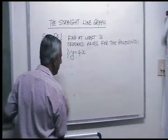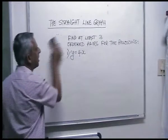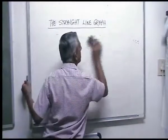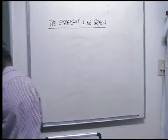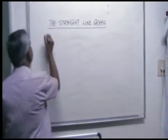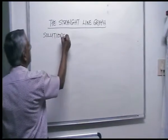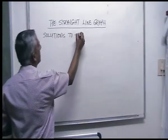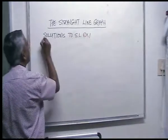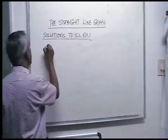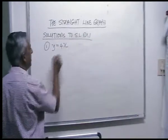Let's find the answers for number one. Let's get all this out of the way first. We're now giving you the solutions to straight line graphs exercise one. Number one was y is equal to four x.